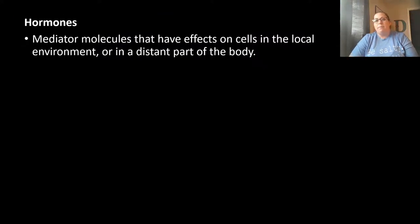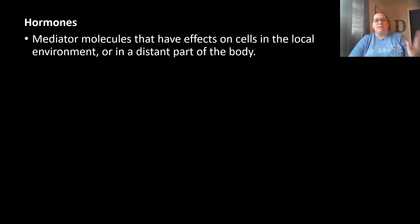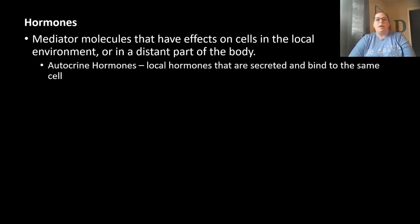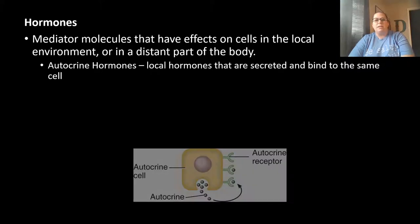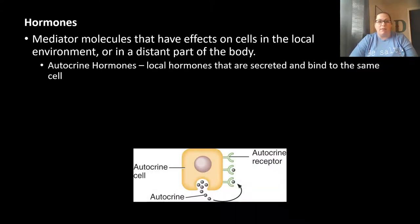Hormones are mediator molecules with different effects in the cell depending on the environment and the type of receptor present. Sometimes a hormone works locally, sometimes at a distant site. Autocrine hormones are secreted and bind directly to the same cell that produced them — 'auto' meaning self. The cell releases the hormone and the hormone attaches to the receptor on that same cell.